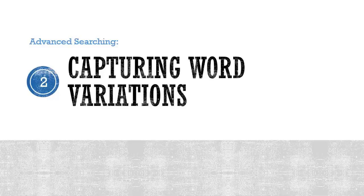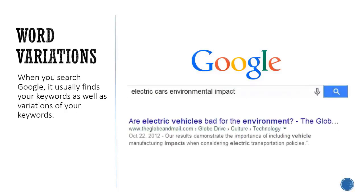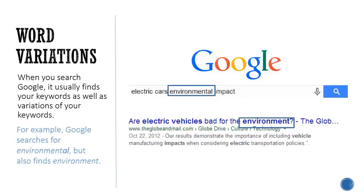Capturing word variations. When you search Google, it usually finds your keywords as well as variations of your keywords. For example, Google searches for the word environmental, but also finds environment.